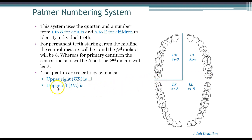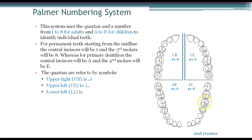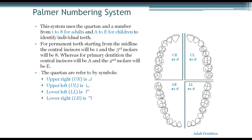The upper left will be the opposite of the upper right, going from the middle out to the end. The lower left will be just the reflection of the upper left, going from the middle towards the back and then swooping out to the left. The lower right will be reflective of what's on the upper right — midline straight out to the right.